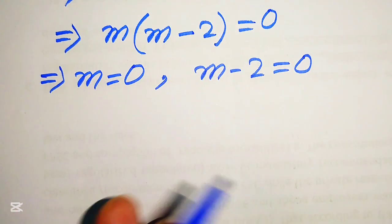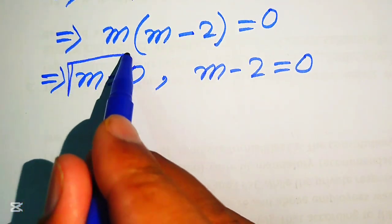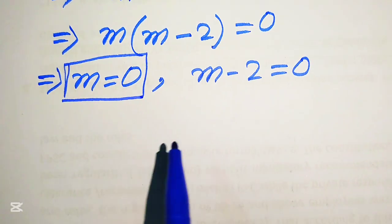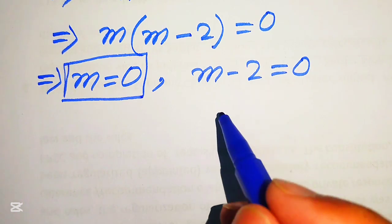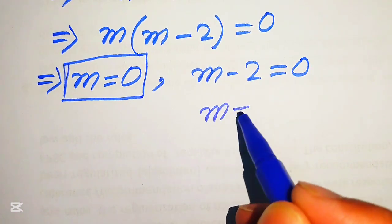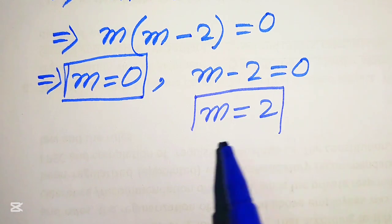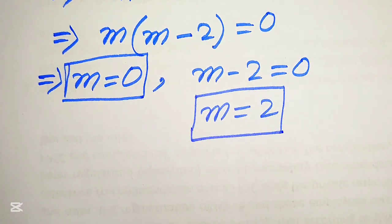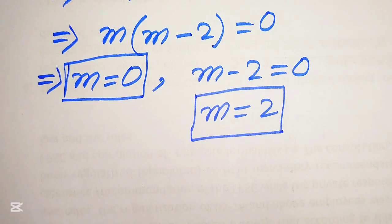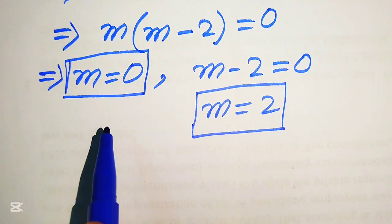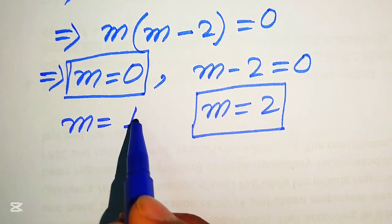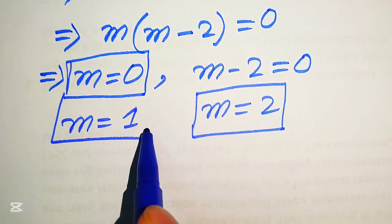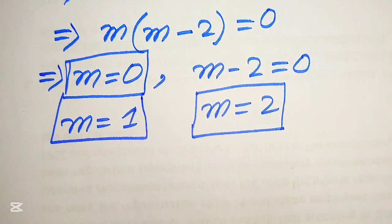From m = 0, this is our second real root. From m - 2 = 0, we get m = 2, which is our third root. So the three roots of the given equation are m = 0, m = 1, and m = 2.